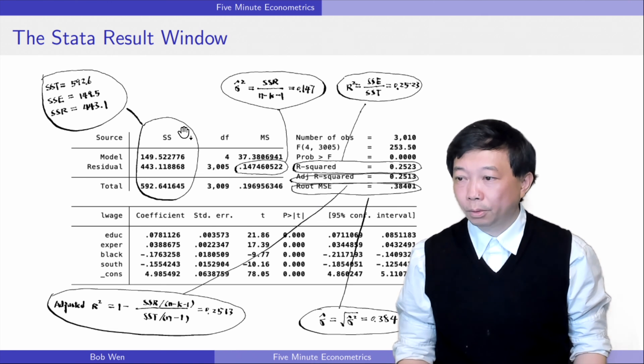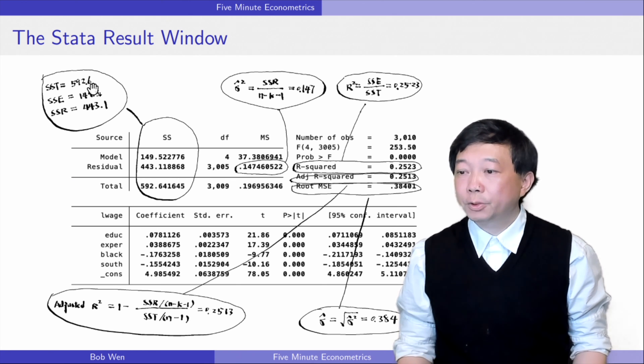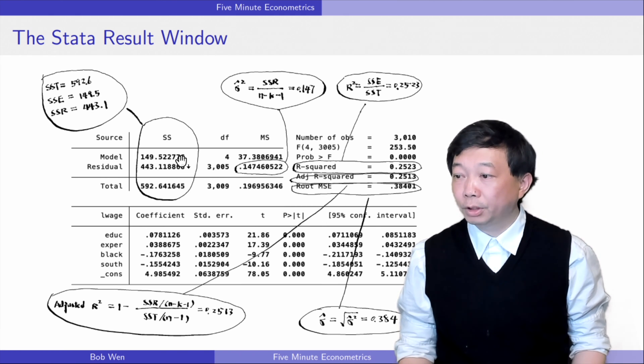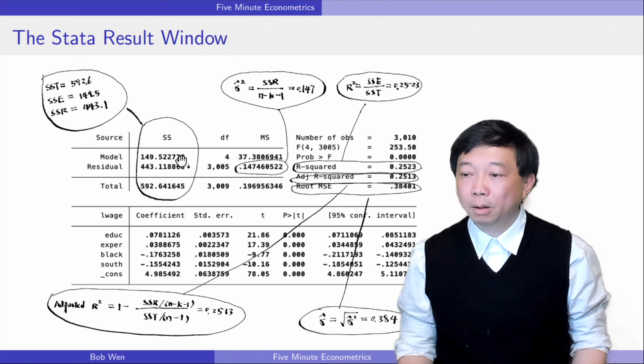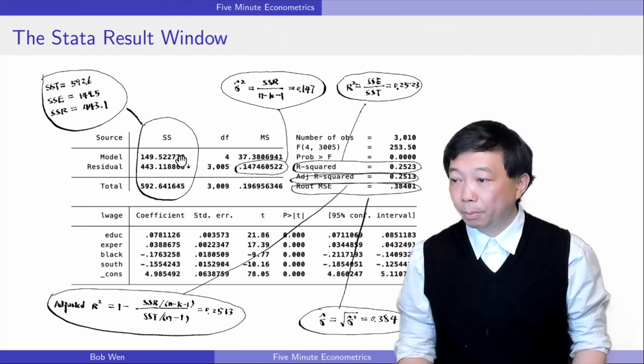In this result window, the total sum of squares SST is 592.6. The explained sum of squares SSE is 149.5. STATA calls it the model sum of squares. The residual sum of squares SSR is 443.1.